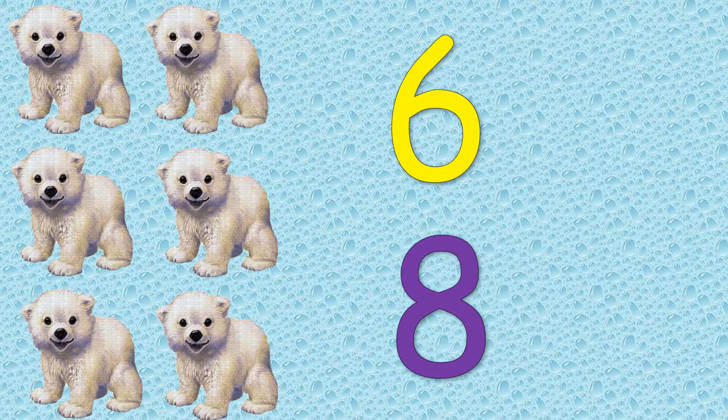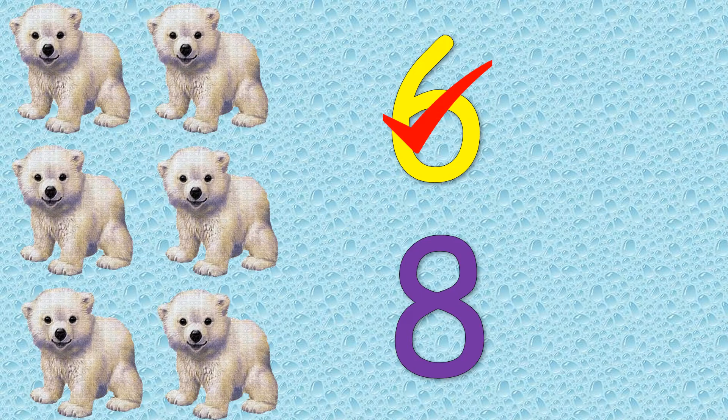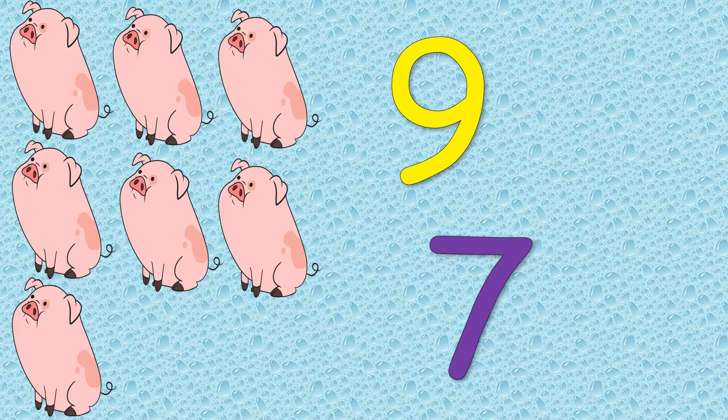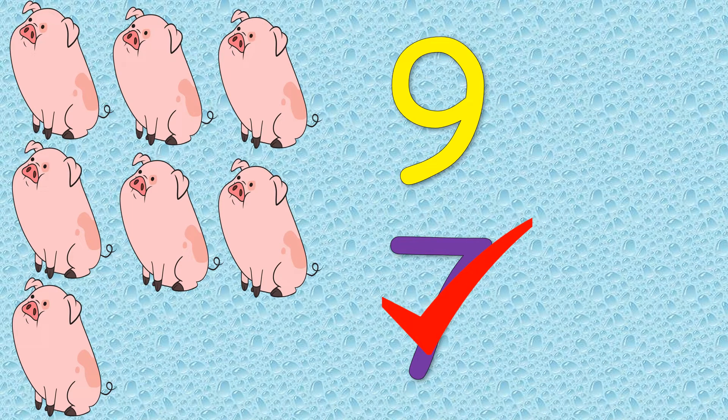What are these? These are puppies. How many puppies are there? Correct. There are six puppies. What are these? These are pigs. How many pigs are there? Correct. There are seven pigs.